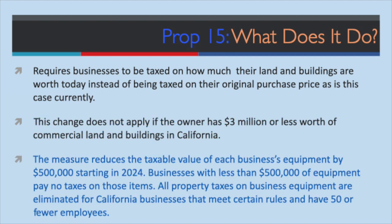Third, this measure reduces the taxable value of each business's equipment by $500,000 starting in 2024. Businesses with less than $500,000 of equipment pay no taxes on those items. All property taxes on business equipment are eliminated for California businesses that meet certain rules and have 50 or fewer employees.